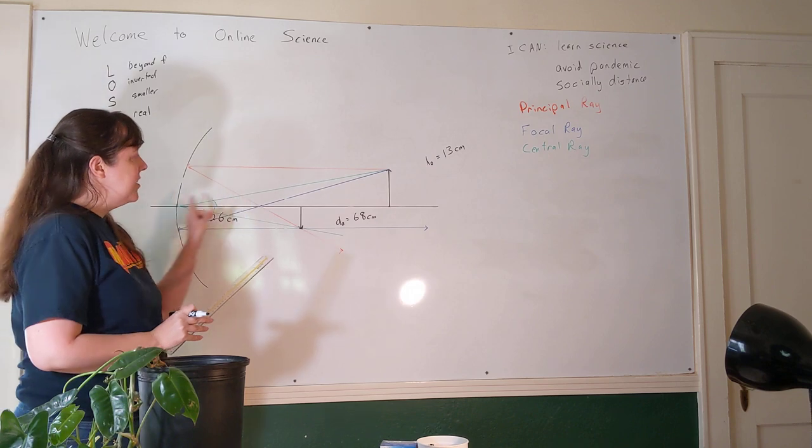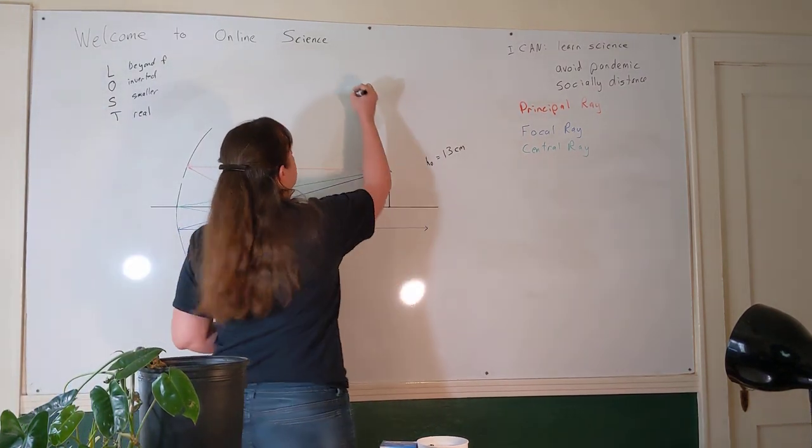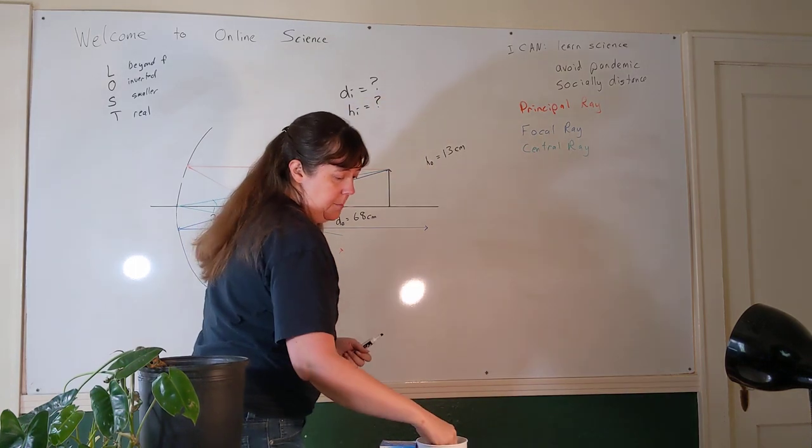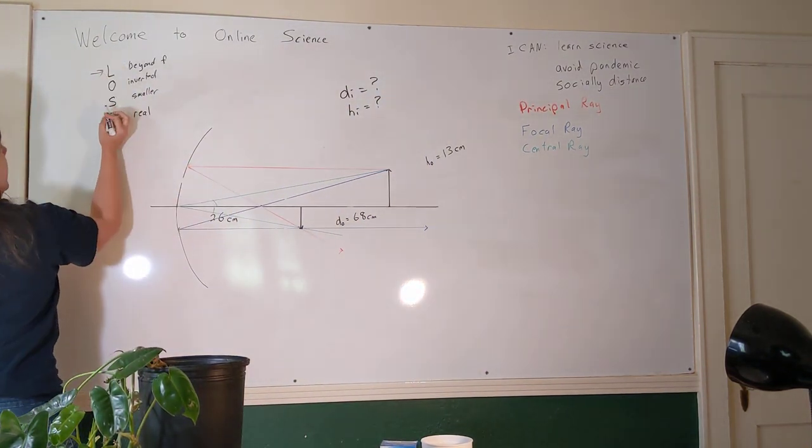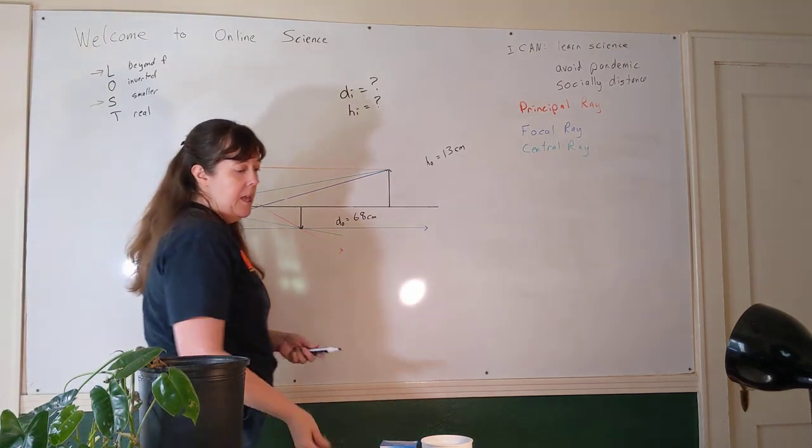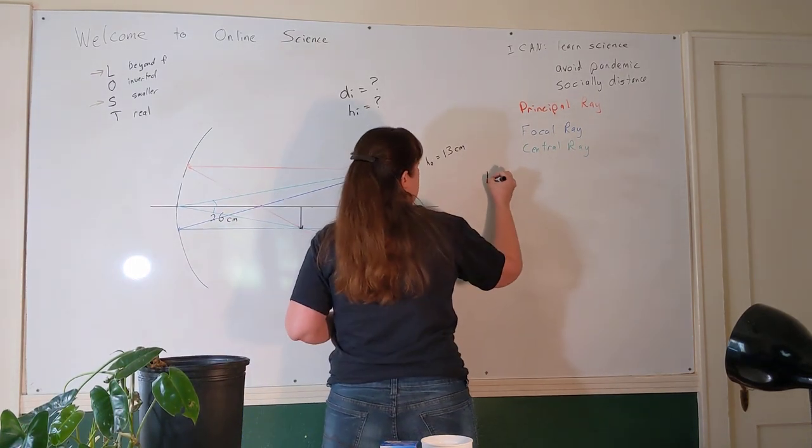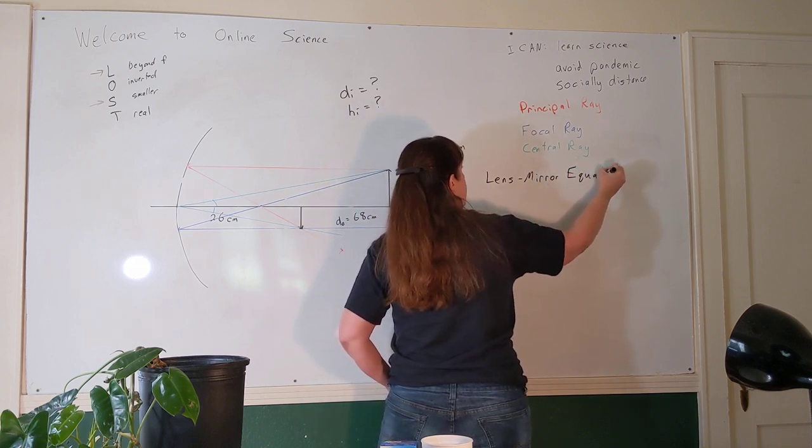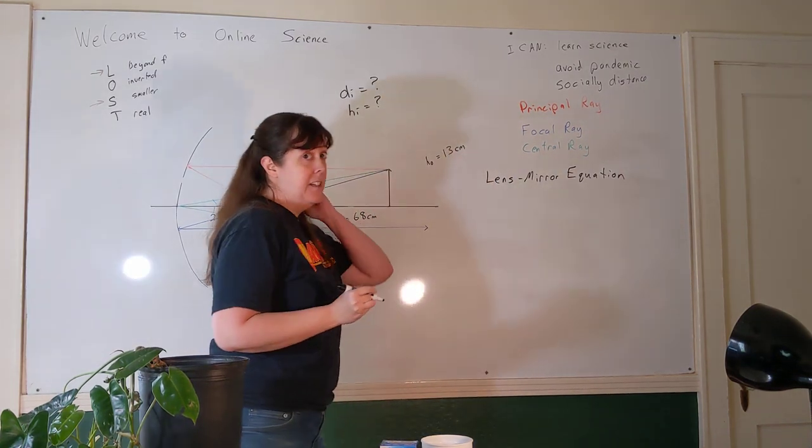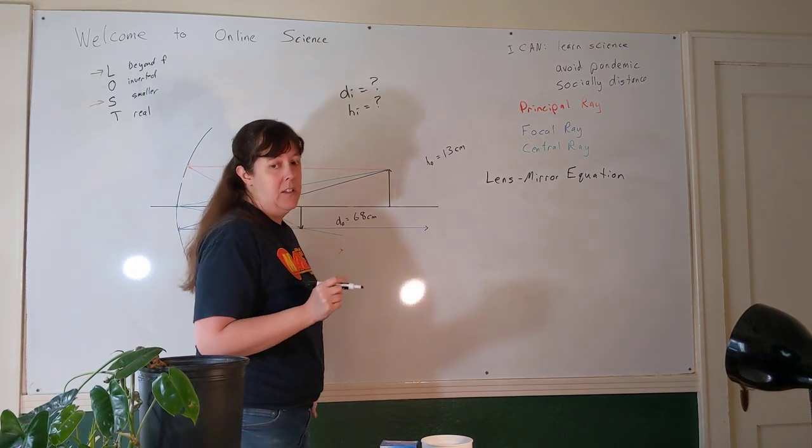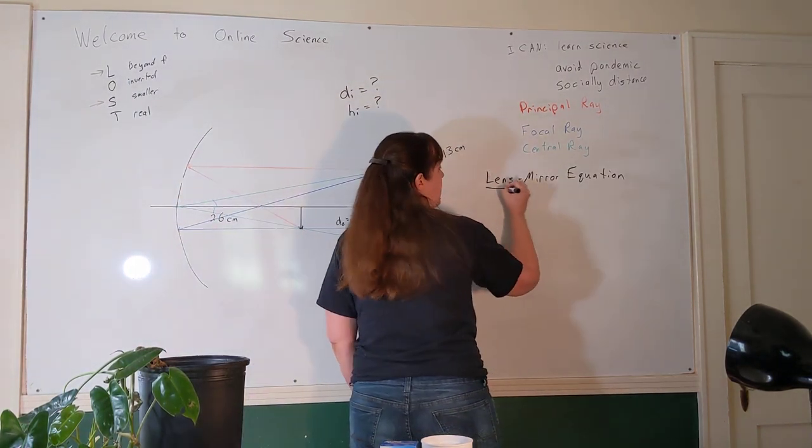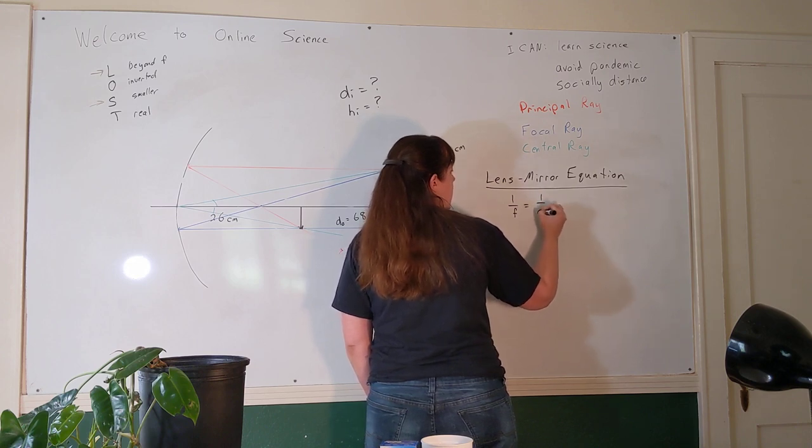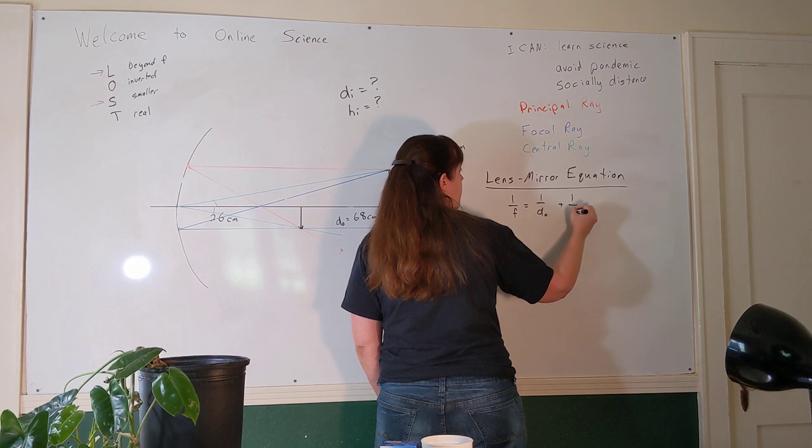But I'd like to know what the distance to this image is and what the height of this image is. I told you last time that we would end up having numerical answers for the location and the size of the images. The equation that's going to give us those is called the lens mirror equation. As the name suggests, we can use it this week for mirrors and also next week for lenses. The first form is the simplest: one over the focal length equals one over the object distance plus one over the image distance.